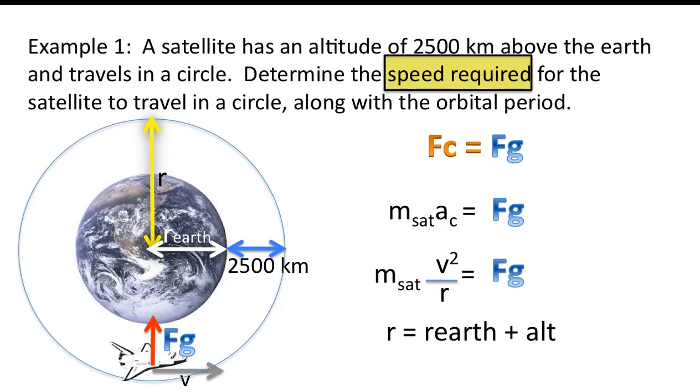So, looking at this diagram, you can clearly see that the radius of the circle is given as the radius of the earth plus the altitude. Substituting the numbers, the radius of the earth is given by 6.38 times 10 to the 6 meters. The altitude is 2.5 times 10 to the 6 meters. We end up getting this answer here. So, we'll label that in our diagram.